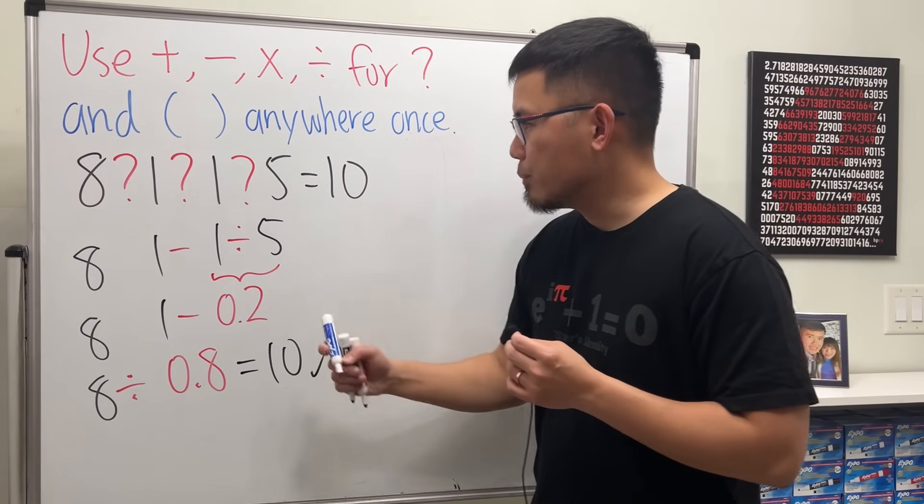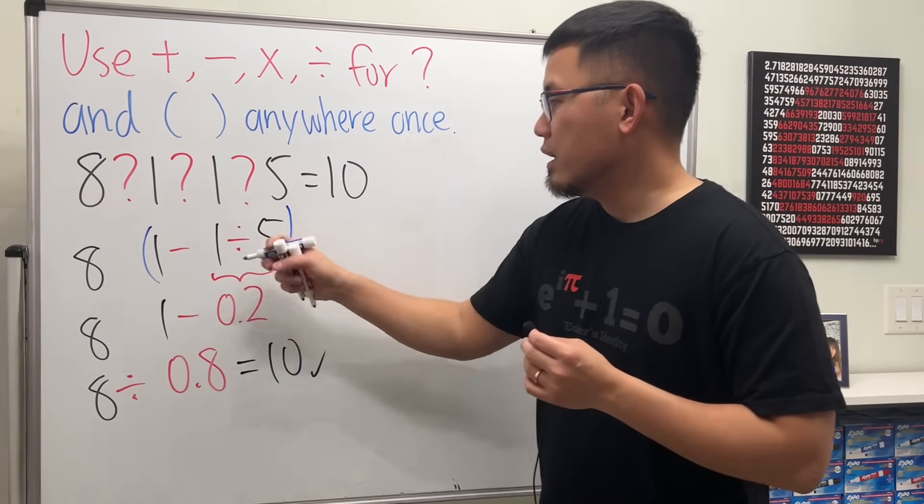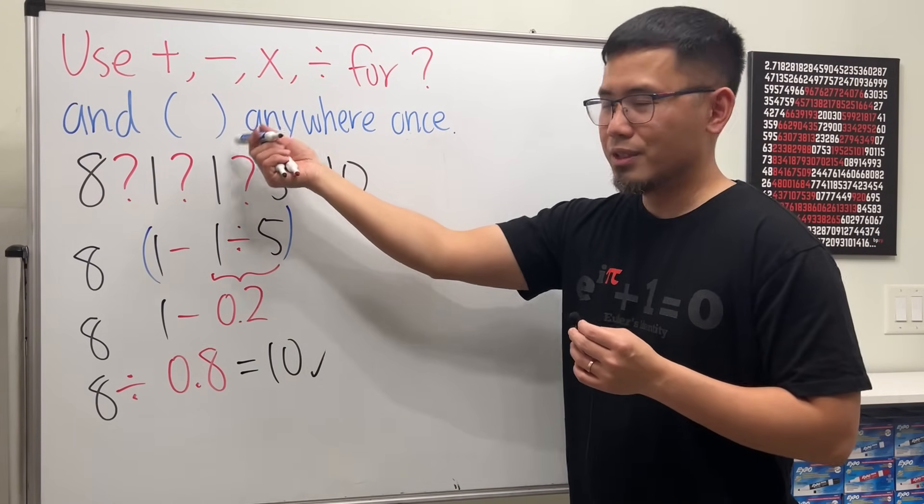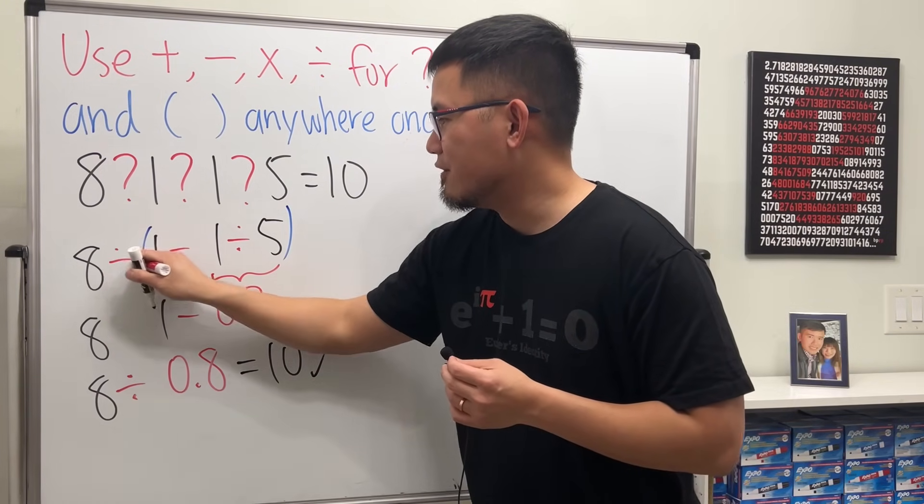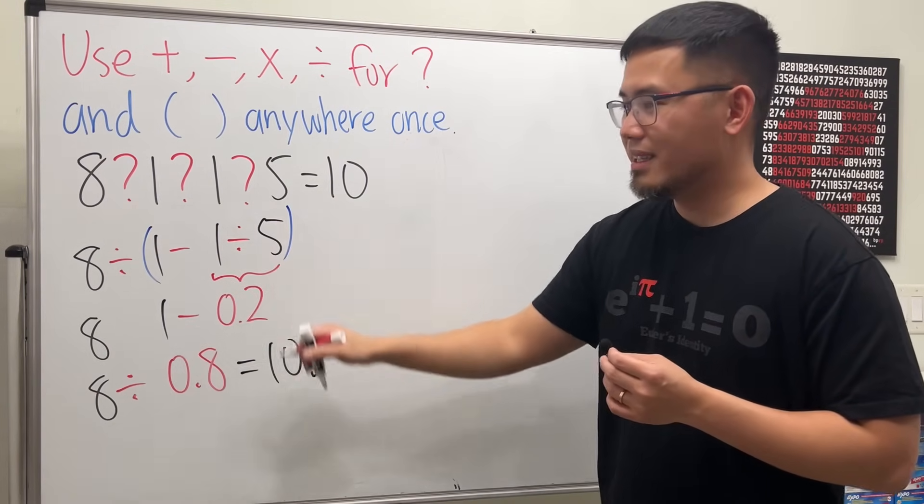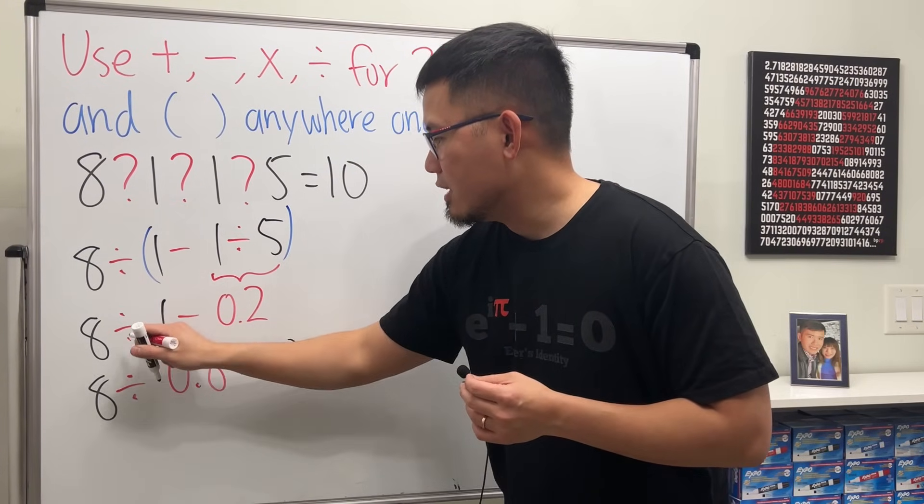So we will have to put a parentheses, and this time it's okay, yeah? Because the rule says so. Put parentheses around this, and then we have the 8 divided by this quantity. So 8 divided by this quantity.